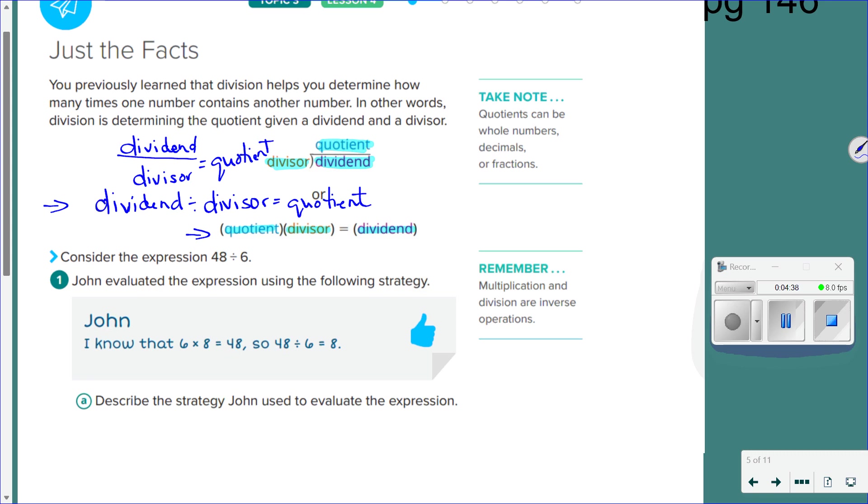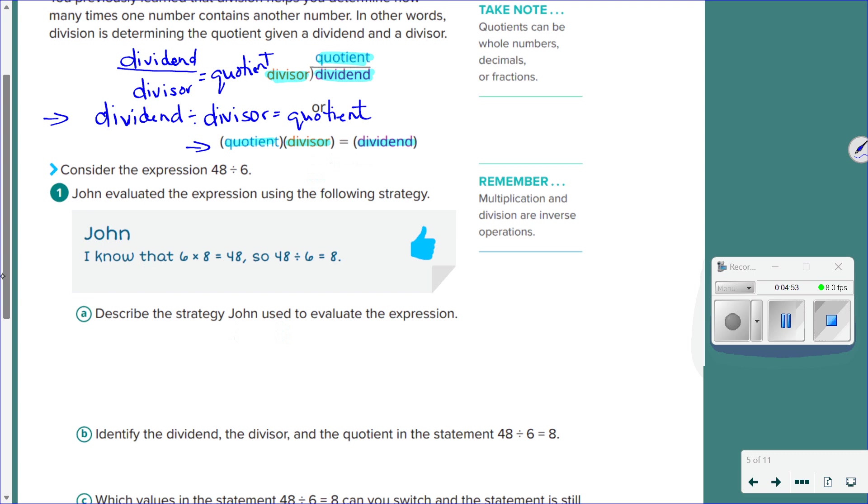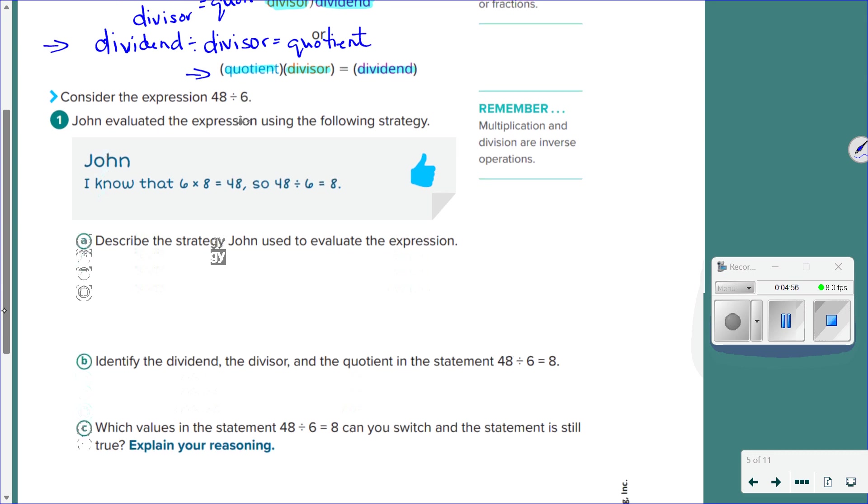In multiplication, I can mess up the order, get the same answer. You cannot do that in division. Okay? Does this make sense to everybody? Do you understand how we have it set up? Yeah. Okay? So that's all your different formats for writing out your division problems. Just understand what the terminology is as we're looking at the numbers.